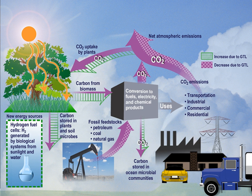At its broadest scale, Earth system science brings together researchers across both the natural and social sciences, from fields including ecology, economics, geology, glaciology, meteorology, oceanography, paleontology, sociology, and space science.